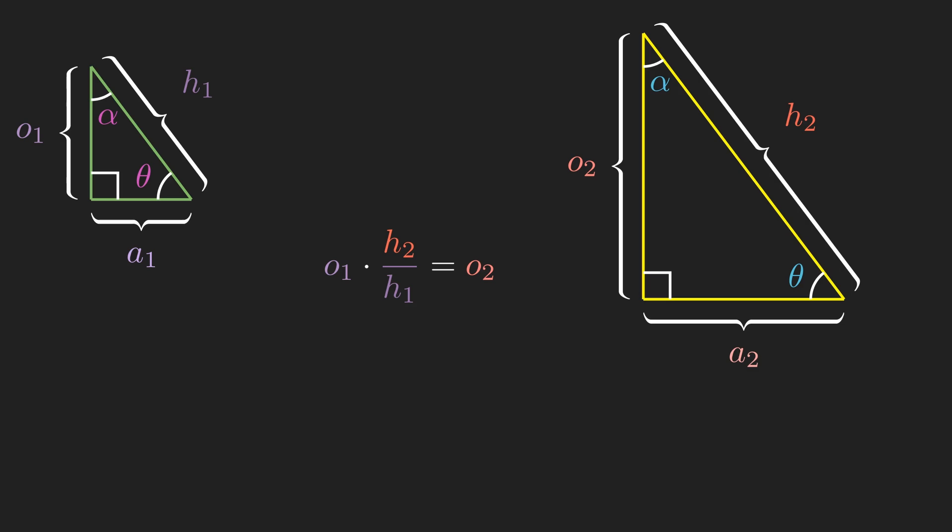From this, we can rearrange to conclude that, assuming your triangles have the same angles, the ratio of the opposite to the hypotenuse is the same between them. We call this ratio sine of a given angle, theta. This same argument also applies to the cosine and tangent functions.